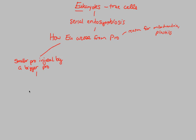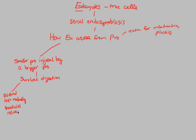The smaller prokaryote actually survived digestion — it didn't die within the bigger prokaryote. Why did this happen? Basically, this smaller prokaryote evolved with the bigger prokaryote into a mutually beneficial relationship. They both evolved a mutually beneficial relationship with each other.